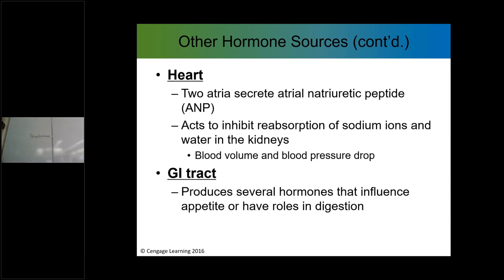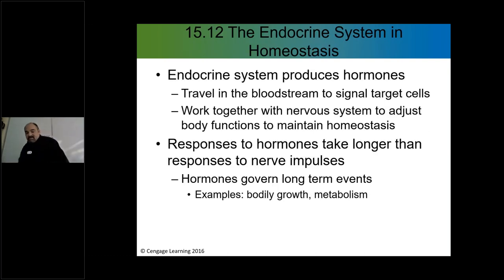ANP acts to inhibit reabsorption of sodium ions and water in the kidneys, which decreases the volume of blood and helps decrease blood pressure. The GI tract — your gastrointestinal or digestive tract — produces several hormones that influence your appetite and help you feel full and sated, and also have roles in digestion. When you think of the endocrine system, think of it as another system that works with the nervous system to help control body functions and maintain homeostasis. The nervous system is very fast acting and short-lived, but the endocrine system takes a while to act yet has a lasting effect over a longer period of time.